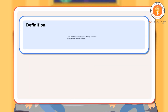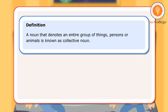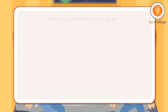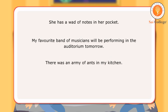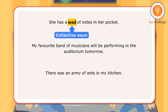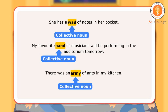Definition: A noun that denotes an entire group of things, persons or animals is known as a collective noun. Let us look at a few sentences. She has a wad of notes in her pocket. My favourite band of musicians will be performing in the auditorium tomorrow. There was an army of ants in my kitchen. In the first sentence, wad is a collective noun as it tells us about a number of notes taken together. In the next sentence, band is a collective noun as it tells us about a number of musicians performing together. In the third sentence, army is a collective noun as it tells us about a number of ants collectively.